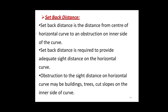Setback distance is the distance from the center of the horizontal curve to an obstruction on the inner side of the curve. In the design of the horizontal alignment, the side distance along the inner side of the curve should be considered. Where there are site obstructions like buildings, cut slopes, or trees on the inner side of the curve, either the obstruction should be removed or the alignment should be changed in order to provide adequate site distance.